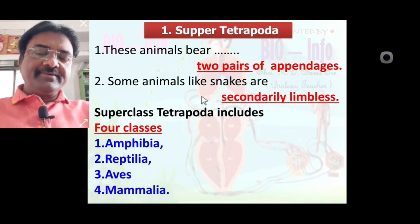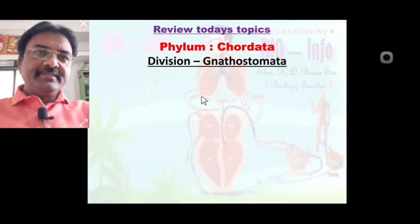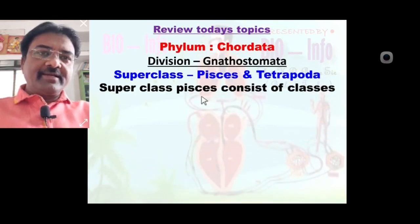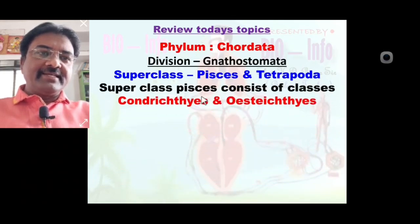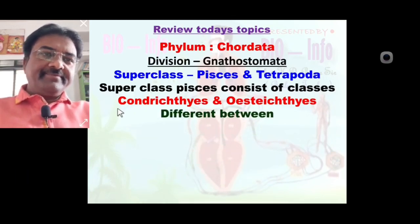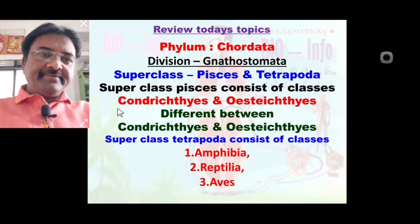Today's lecture is completed. Review of today's topic: we learned phylum Chordata, division Gnathostomata, superclass Pisces and Tetrapoda. Superclass Pisces consists of classes Chondrichthyes and Osteichthyes. We learned the characteristics of Pisces and the differences between Chondrichthyes and Osteichthyes. Superclass Tetrapoda consists of classes Amphibia, Reptilia, Aves, and Mammals.